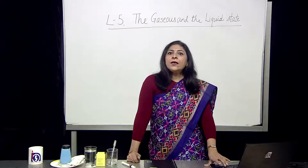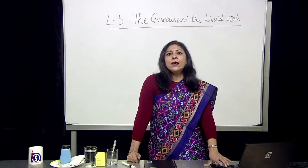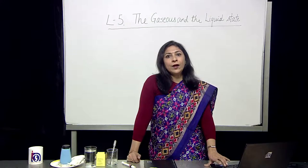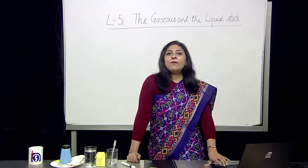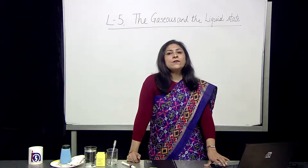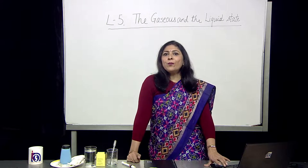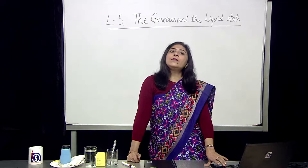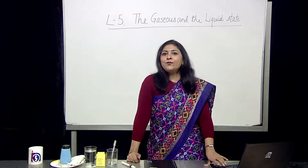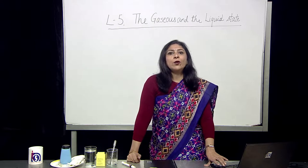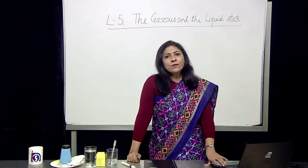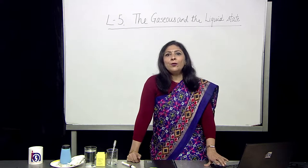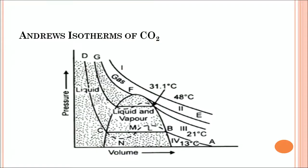At point C, the gas is completely in the liquid phase. From C to D, it is behaving as a liquid, and the slope is very steep. A liquid is almost incompressible — we cannot compress the liquid easily, because as we go from gas to liquid the molecules get much closer to each other, making further compression very difficult. This was Andrews' key observation from the graph.